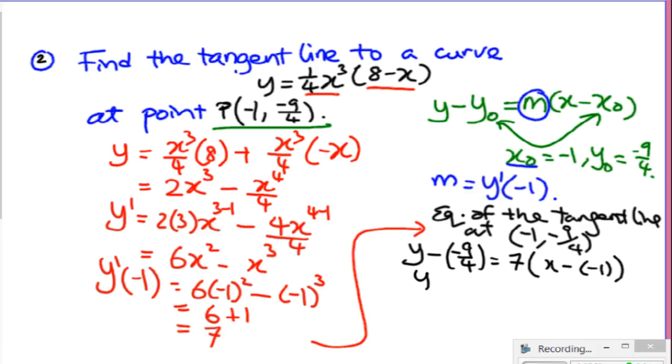This is y plus 9 over 4 equal to 7x minus minus 1 plus. Therefore, y is equal to 7x plus 7 minus 9 over 4.